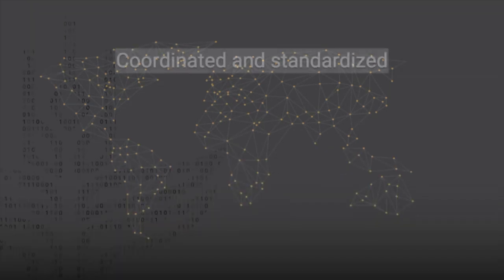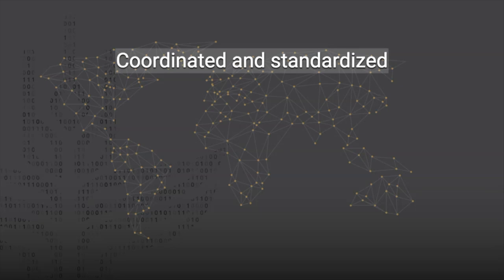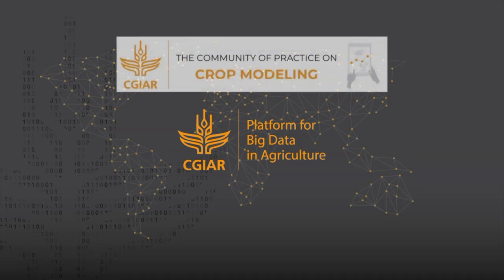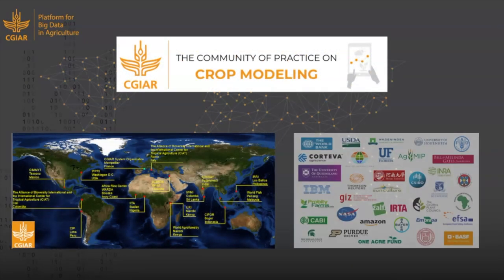To initiate a better coordinated and more standardized approach to crop modeling in agricultural research, the CGIAR platform for big data and agriculture supports a crop modeling community of practice involving CG centers and a wide range of international partners.